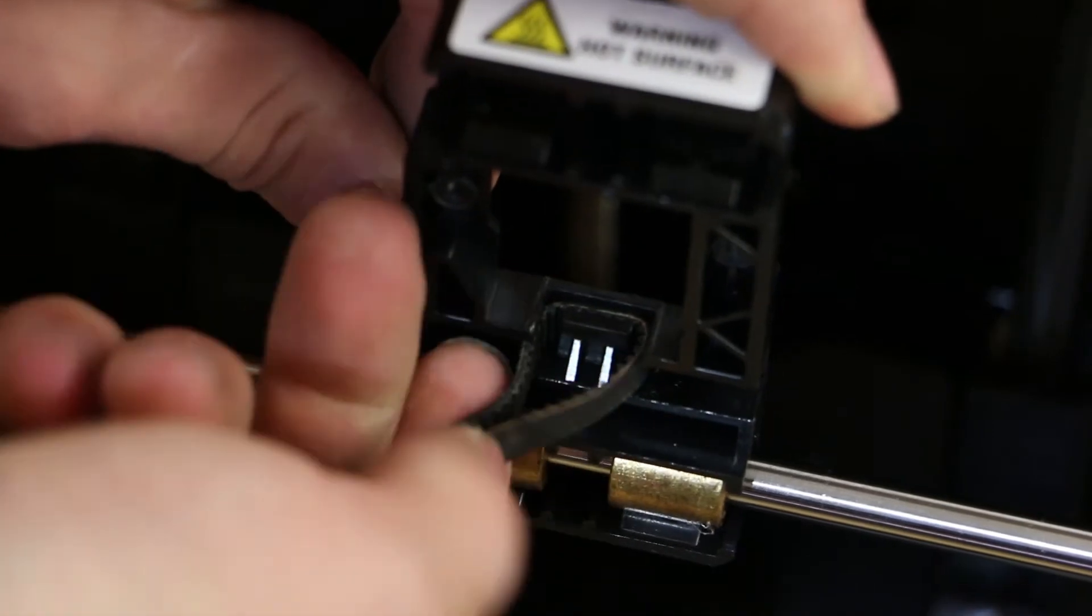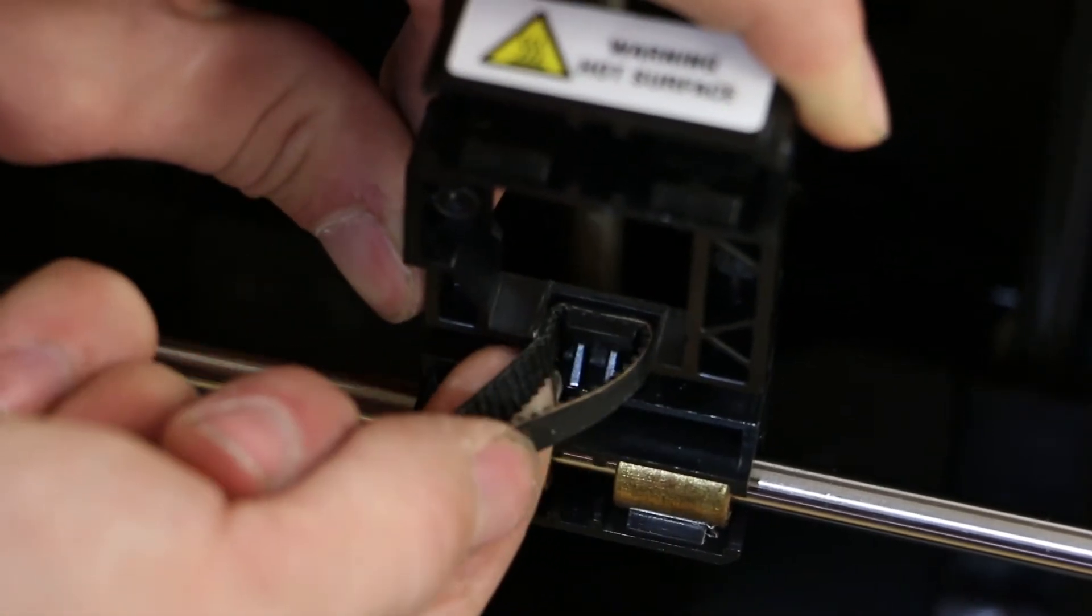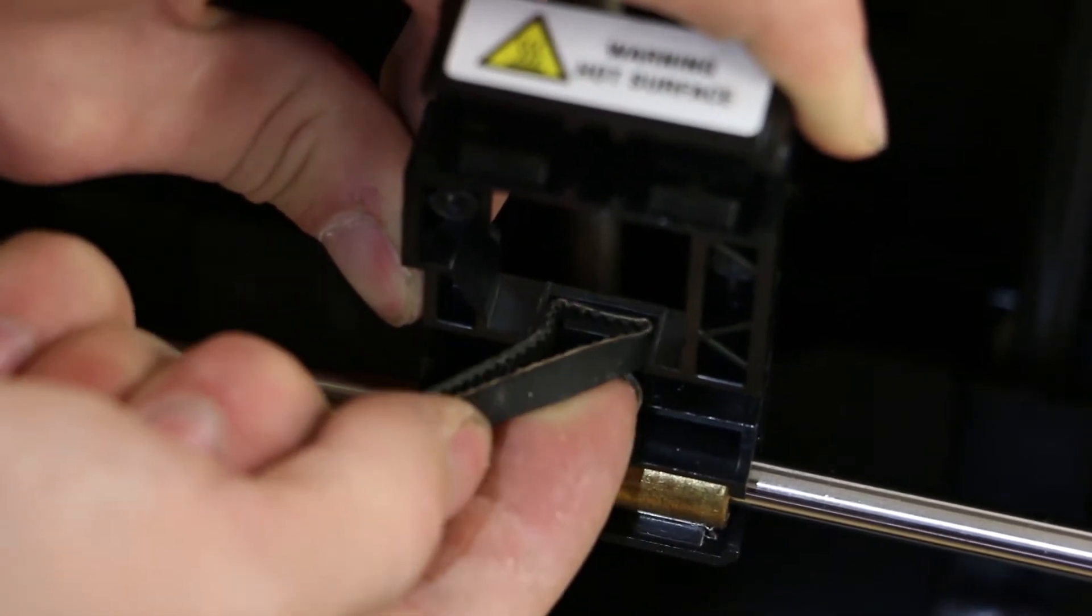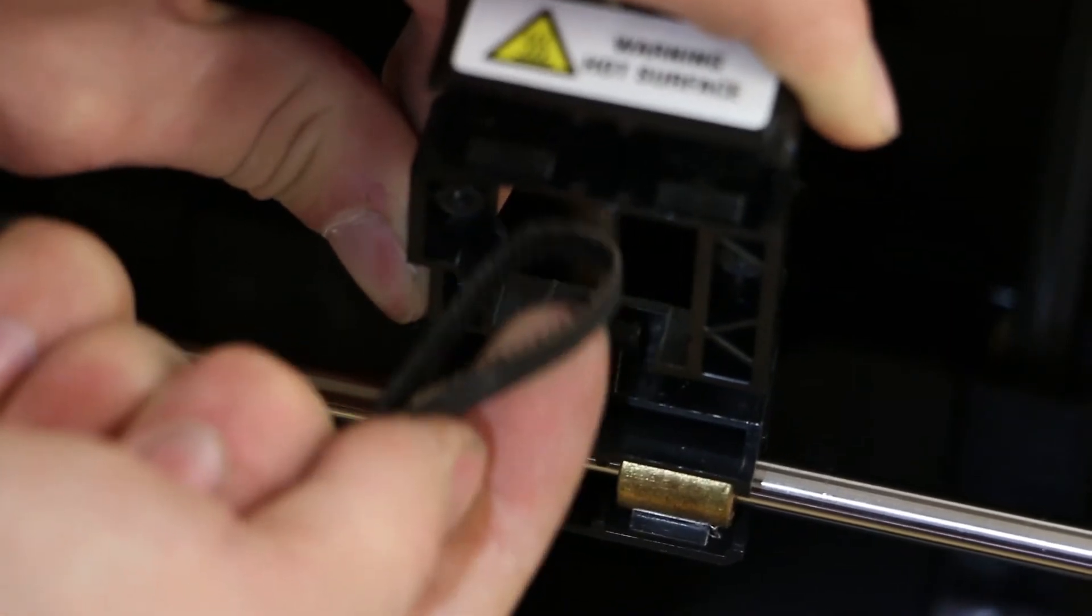Maneuver the belt so both sides become perpendicular to the carriage. Put your finger underneath the folded belt and push up. It should slide out.